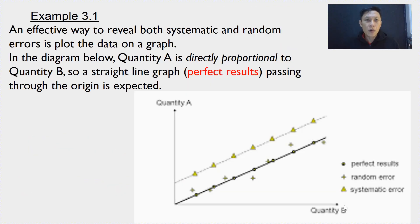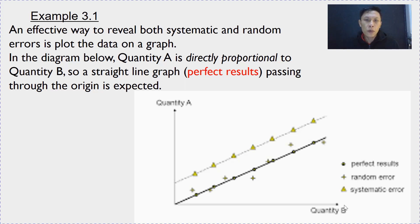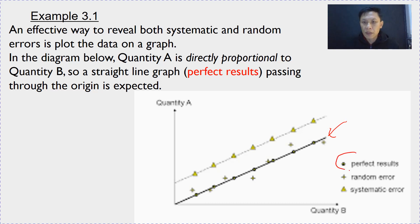In example 3.1, we look at how a graph will reveal both systematic and random errors. Firstly, assuming quantity A is directly proportional to quantity B, if you have perfect results with no random error or systematic error, then you expect a straight line graph passing through the origin. This is indicated by the black line here — perfect results.